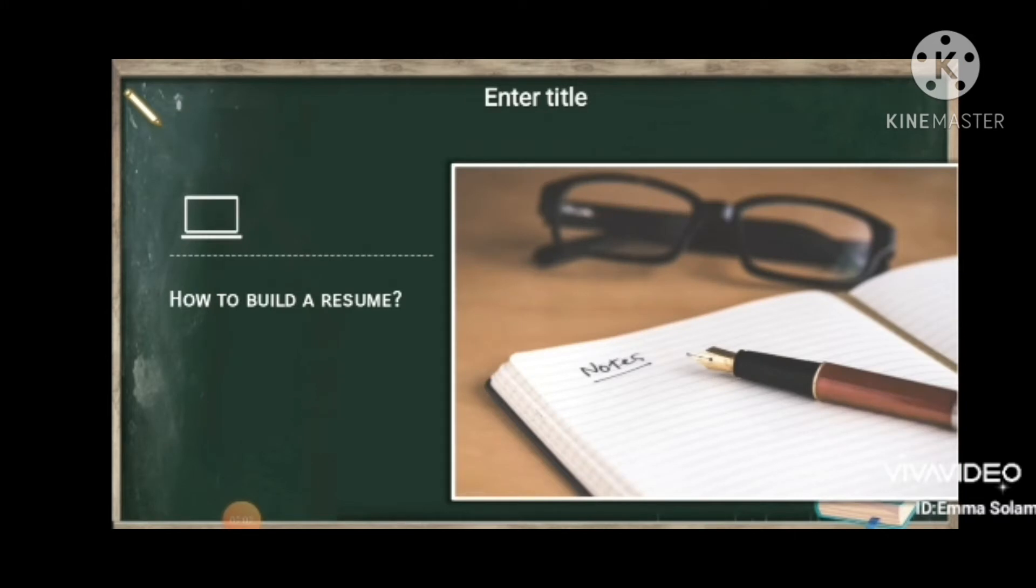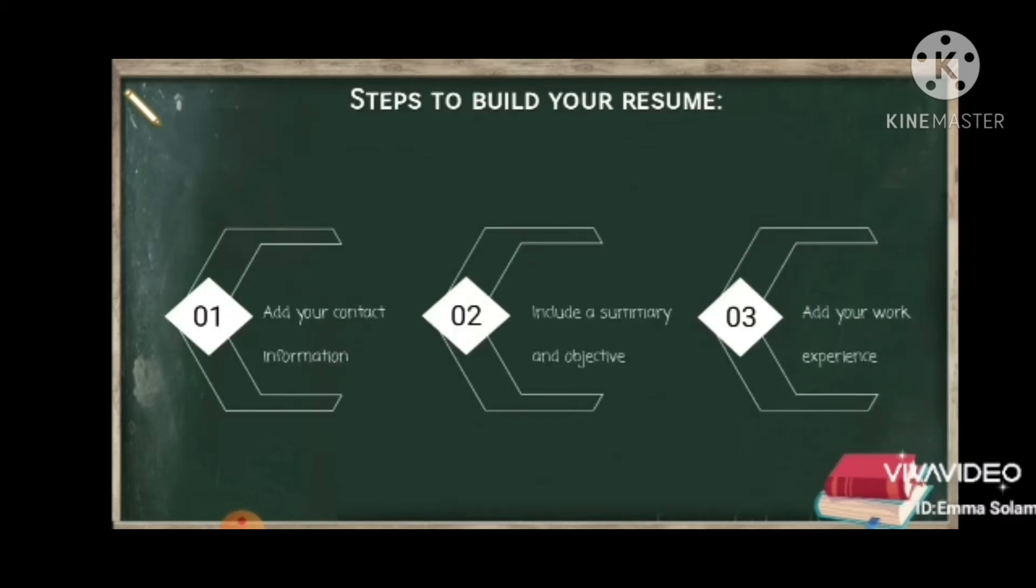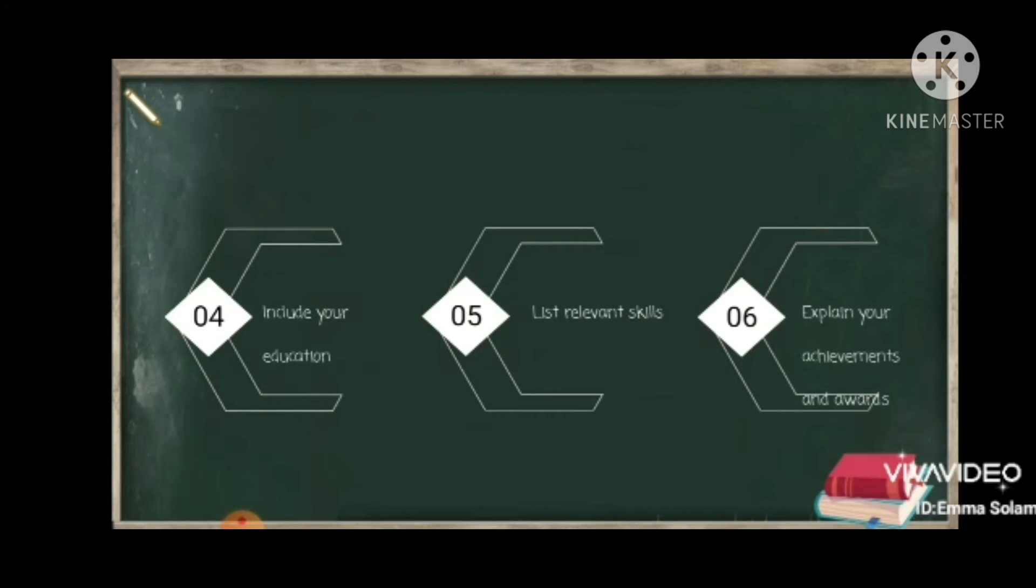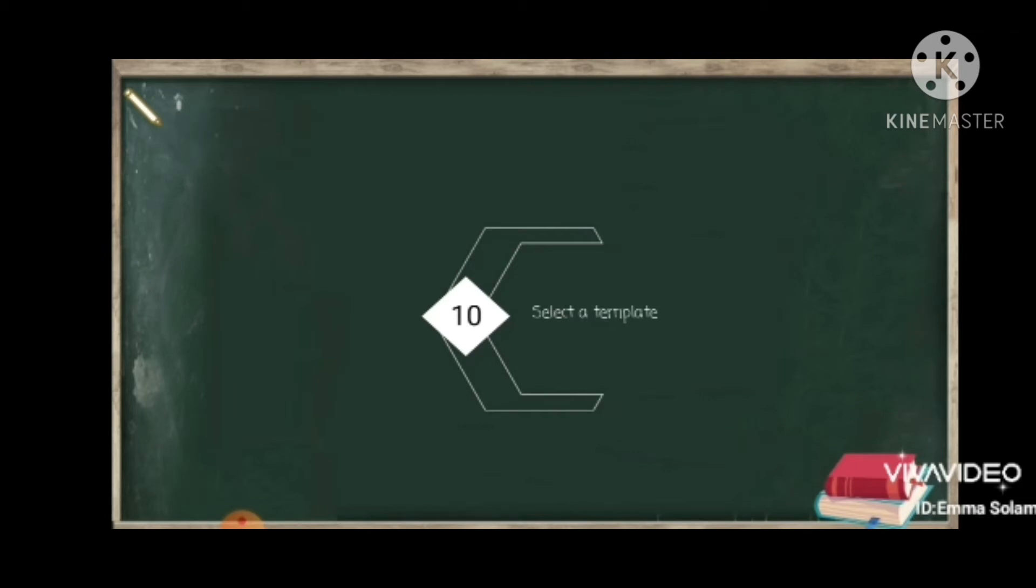How to build your resume: Constructing a compelling and visually appealing resume can be challenging, but a few strategies can help. Learning what to include in your resume can help you build a combined, visually appealing document that could impress hiring managers. You can follow these steps to build your resume: First, add your contact information. Second, include a summary or objective. Third, add your work experiences. Fourth, include your education. Fifth, list relevant skills. Sixth, explain your achievements and awards. Seventh, use a business format. Eighth, include keywords. Ninth, review samples. And last, select a template.